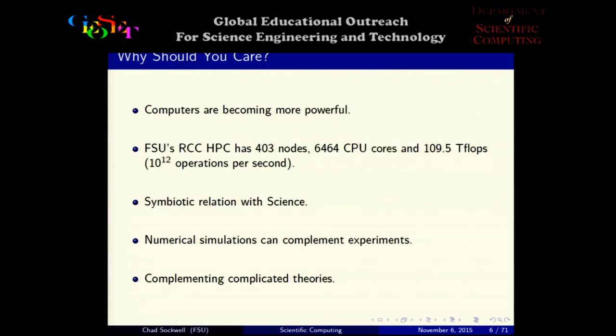Why should you care? Every day computers are becoming more powerful, they're getting everywhere, and everyone has a cell phone in their pocket. Florida State's Research Computing Center has a high-performance computer with 403 nodes — essentially computer boxes — containing a little over 6,000 CPU cores. We use this to run our codes, saving a lot of time by running them in parallel across several different computers and gaining a large speed-up.